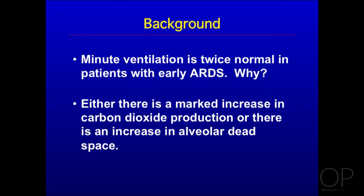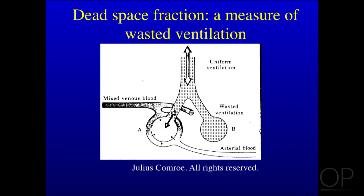We reasoned that either there is a marked increase in carbon dioxide production or an increase in alveolar dead space. Many years ago, Julius Comroe from the University of Pennsylvania, who founded our Cardiovascular Research Institute at UCSF, published this simple diagram to illustrate how dead space really occurred simplistically in the lung. What we're talking about is ventilation to an alveolar unit that does not have blood flow — or there could be variations on a theme with reduced blood flow as opposed to no blood flow.